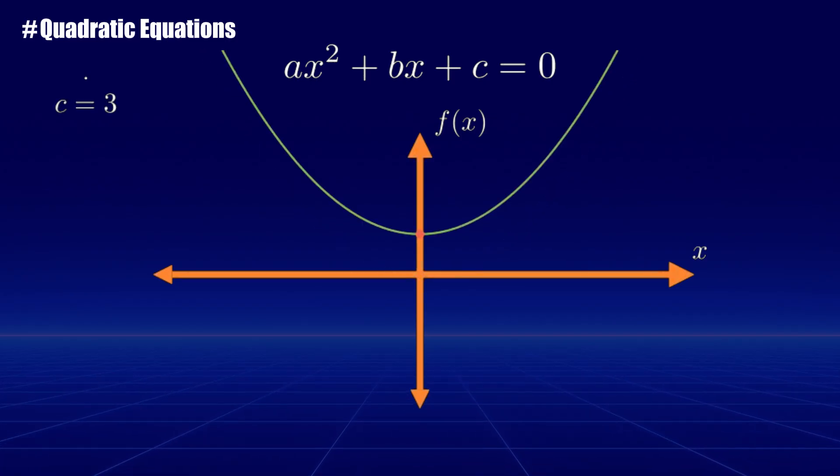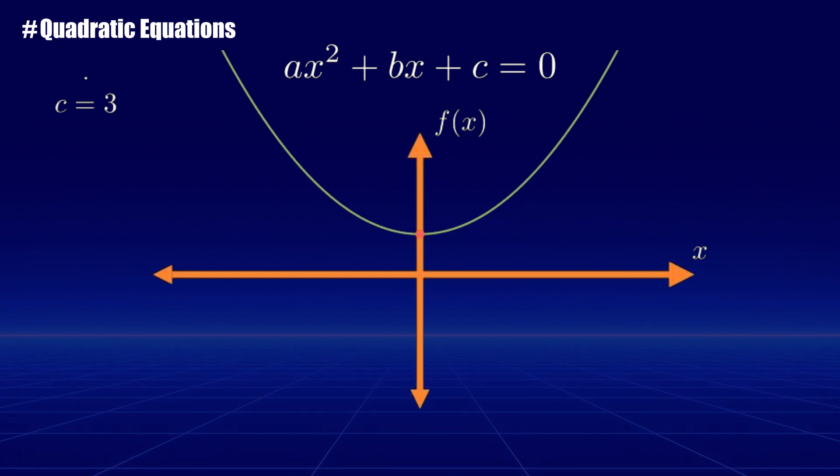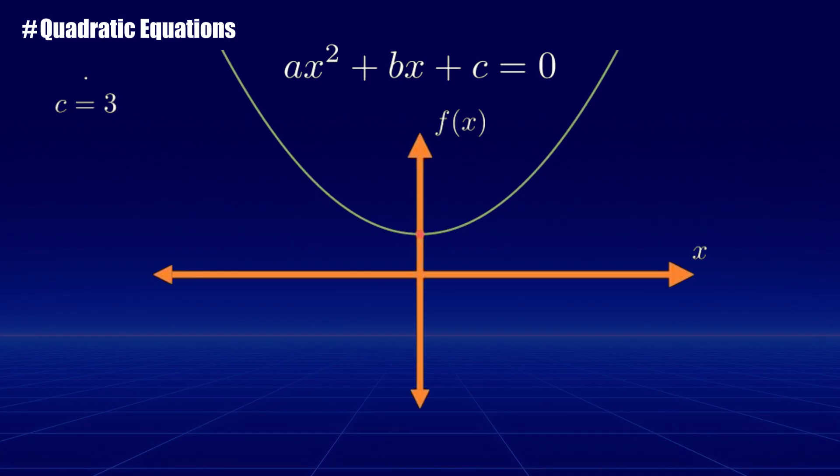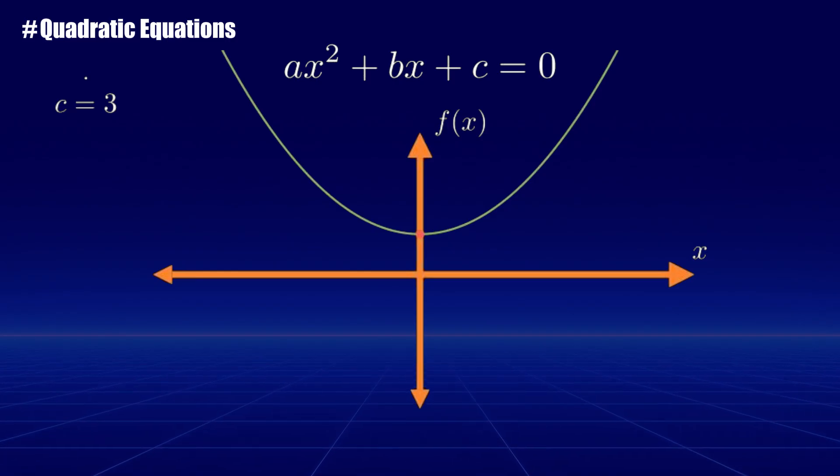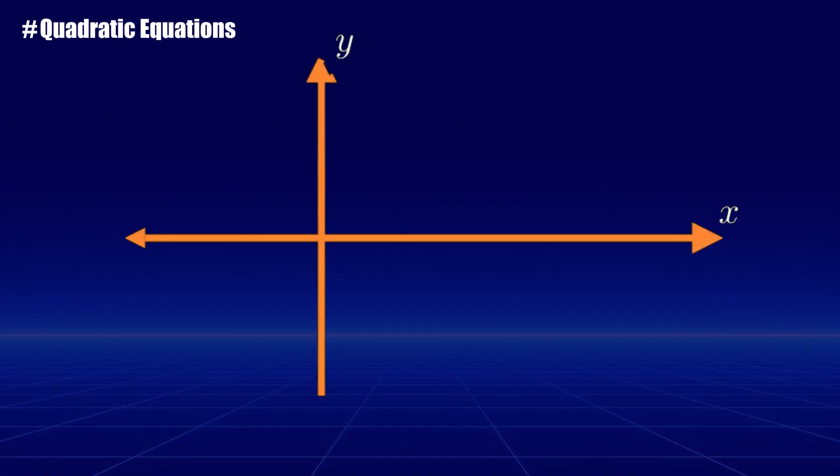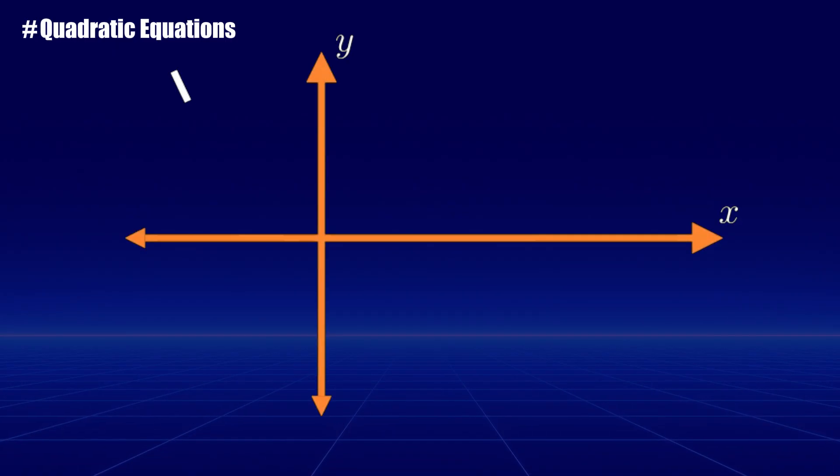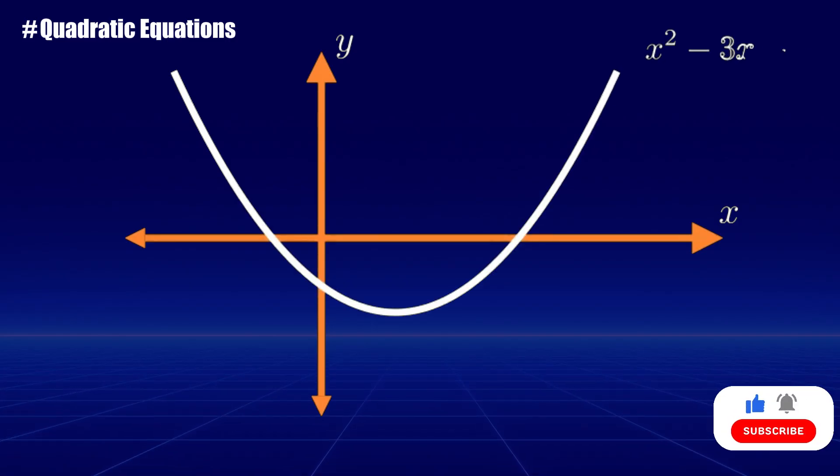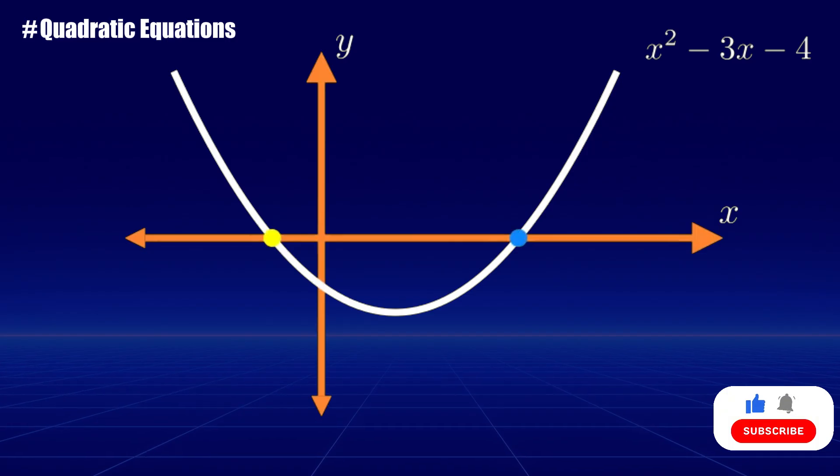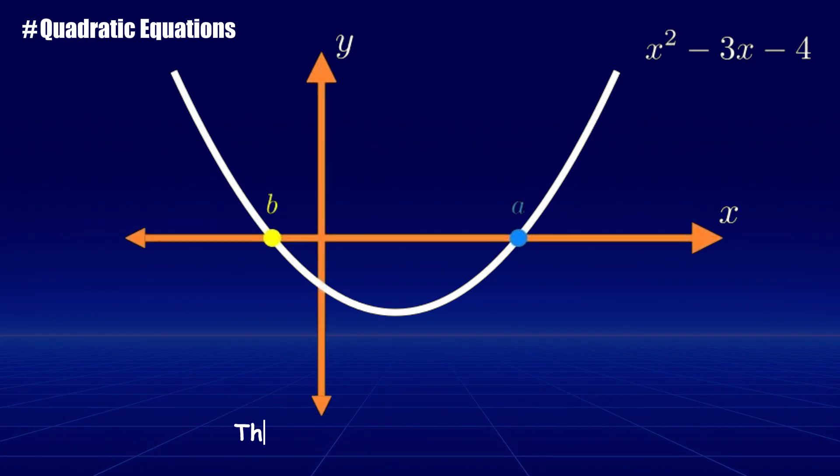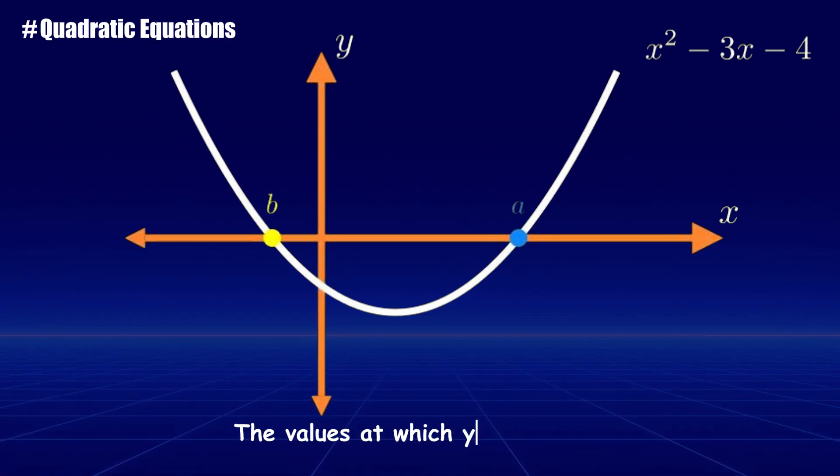Quadratic equations can be solved using several methods, each suited for different situations. Let's give an overview of the most common methods. Before we start, it's important to understand what we actually mean by solving the quadratic equation. Essentially, solving a quadratic equation means finding the parabola intercepts with the x-axis. In other words, the values at which y or f equals zero.